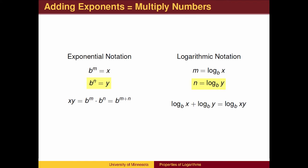We will now define a second exponential and logarithmic equation and ask what happens when we multiply. What exponent do we put on b to get x times y? When multiplying numbers, we add exponents. So m plus n is the exponent we put on b to get x times y.